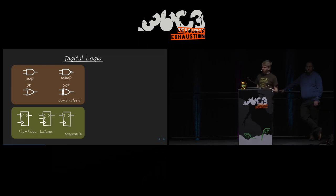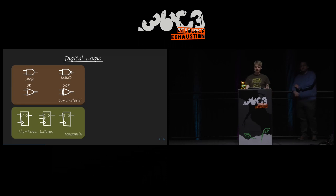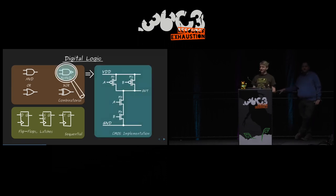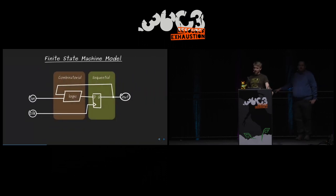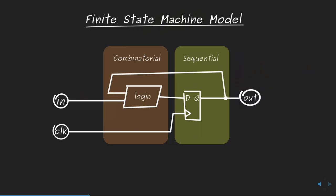Logic functionality is implemented using CMOS technologies, representing all logic as digital gates using small PMOS and NMOS MOSFET transistors. For modeling more complex digital circuits, we use the finite state machine model, consisting of a combinatorial and a sequential part. The output depends on both the internal state in the register and the inputs to the combinatorial logic, and the internal state is always changed by both inputs and current state.